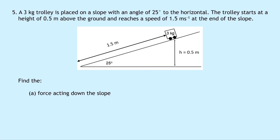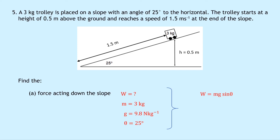Question 5 says that a 3 kilogram trolley is placed on a slope at 25 degrees to the horizontal. It starts at a height of 0.5 meters and reaches a speed of 1.5 meters per second at the end. Part A asks for the force acting down the slope — this is the component of weight parallel to the slope, given by mg sine theta. With mass 3 kg, g 9.8, and angle 25 degrees, we get 3 times 9.8 times sine 25, which equals 12.4 newtons.